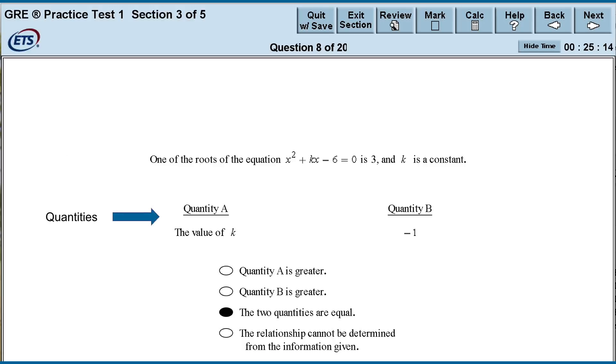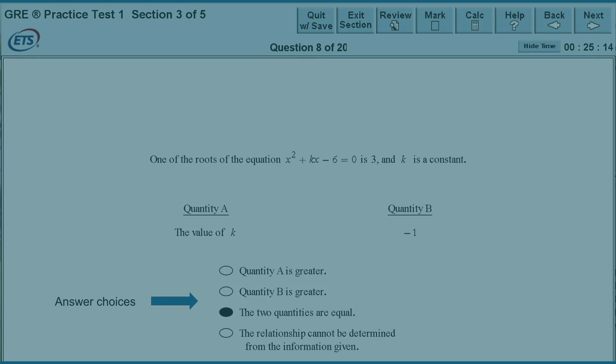Then, we have two quantities labeled quantity A and quantity B. Quantity A will always appear on the left, while quantity B will always appear on the right. Like the question stem, a quantity can take many forms. It may be a number, a variable, an expression, a phrase, etc. Finally, each question has the same four answer choices, of which we can only choose one. Quantity A is greater. Quantity B is greater. The two quantities are equal. And the relationship cannot be determined from the information given.